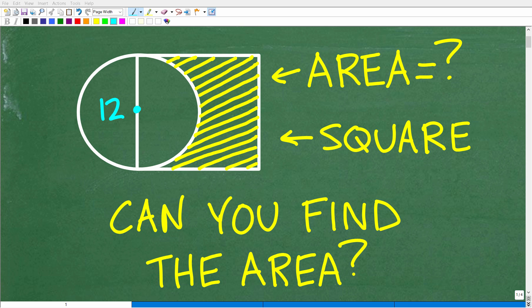The problem is can you find the area, and the area that we are talking about is this region highlighted in yellow. Here is the situation: we have a circle that is overlapping a square. This side of the square is running through the diameter of the circle and it is 12 units long.